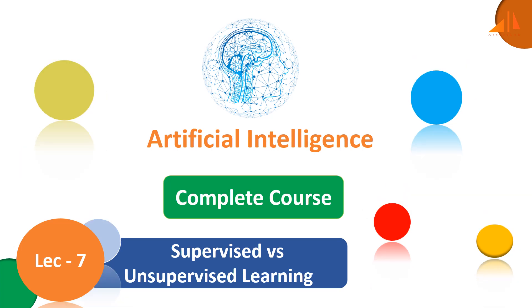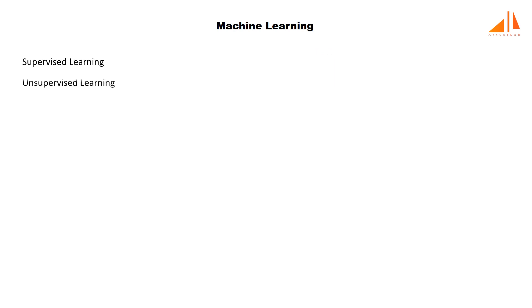Hi friends. In our previous tutorial on machine learning and its types, we briefly discussed two very popular machine learning algorithms: supervised learning and unsupervised learning. In this tutorial, we will elaborate more about these two learning techniques and how they differ in learning. If you have not watched our tutorial on machine learning, please watch that first. In that tutorial we discussed labeled data and unlabeled data, which sets the foundation for supervised and unsupervised machine learning techniques.